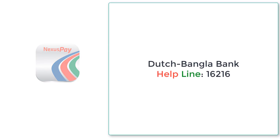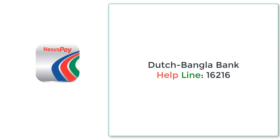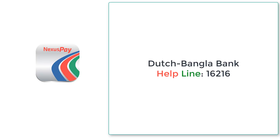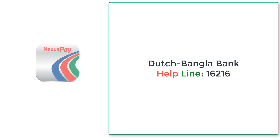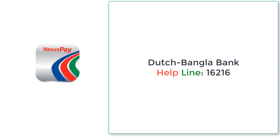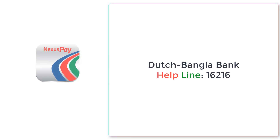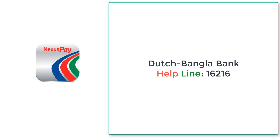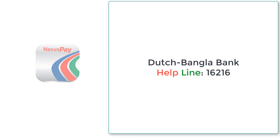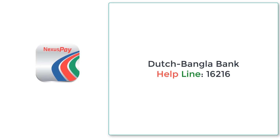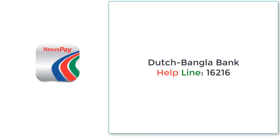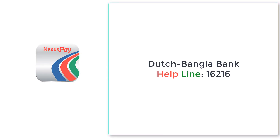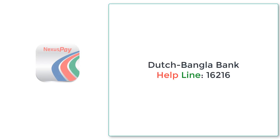When we have our registration code, we have to register for the OTP. When we have our registration code, we have to do the OTP. If we have a one-time password, we will get the OTP. If we have our Dutch Bank, we will get the SMS code.